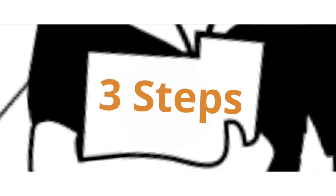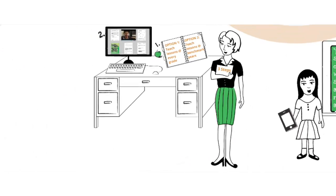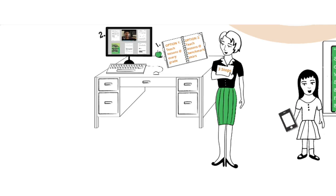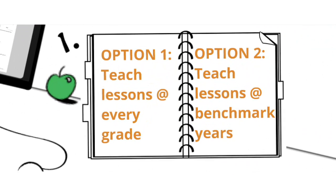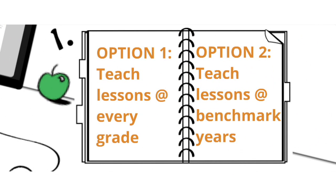Here are the three easy steps to using this toolkit. Step one: determine your role. The government hasn't indicated how this education needs to be delivered, so it's up to your district or school to decide what's best.